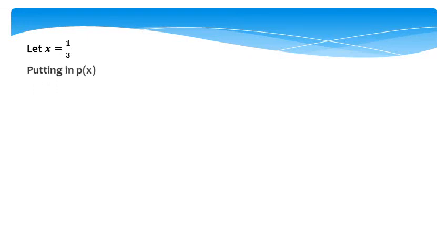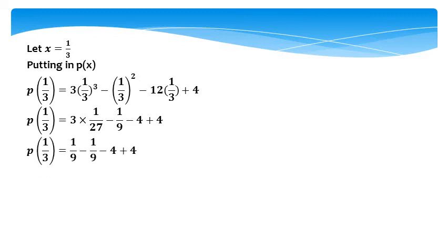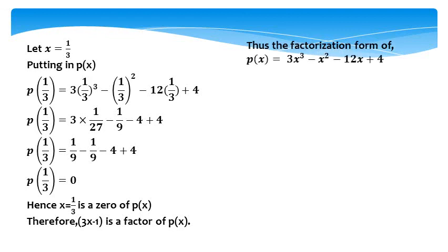Let x equal 1/3, putting it into p(x). After putting in the value of 1/3: 3 times 1/27 minus 1/9 minus 4 plus 4. Positive and negative values cancel, so p(1/3) equals 0. Hence, x equals 1/3 is a zero of p(x). Therefore, (3x minus 1) is a factor of p(x). Thus, the factorized form of p(x) equals 3x³ minus x² minus 12x plus 4, which equals (x plus 2)(x minus 2)(3x minus 1).